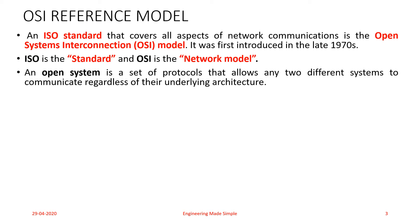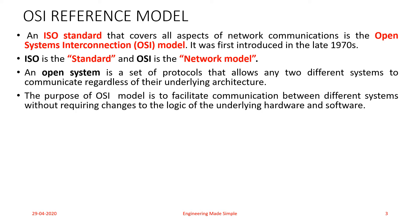An open system is a set of protocols, that is rules, that allows two different systems to communicate regardless, even if they have heterogeneous architecture or different architecture. The purpose of the OSI model is to facilitate communication between different systems without requiring changes to the logic of the underlying hardware and software.